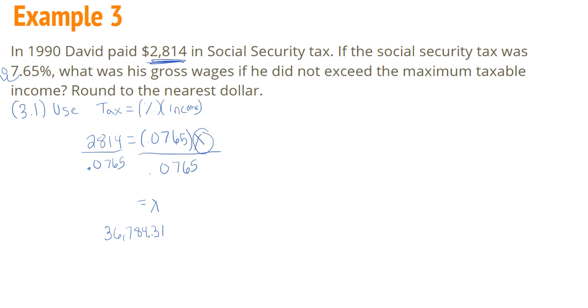And we don't have to round after. We don't have to round up. Actually, it says round to the nearest dollar. So here's the nearest dollar, which means we also need to look at 3. Since 3 is less than 5, we actually round down to 0. So it's $36,784. And that is how much income he earned in 1990.